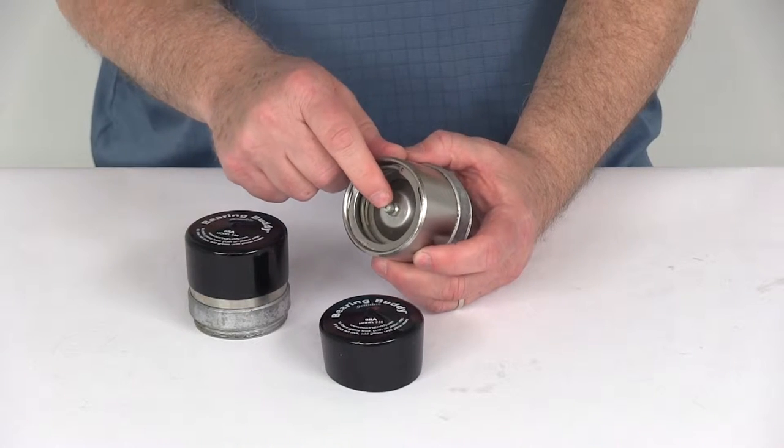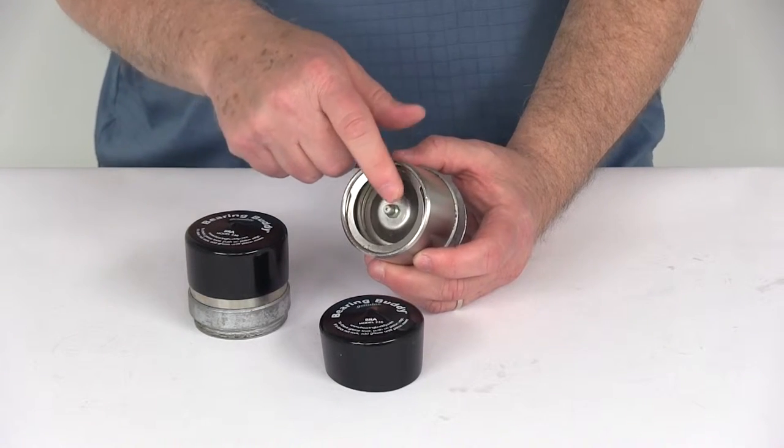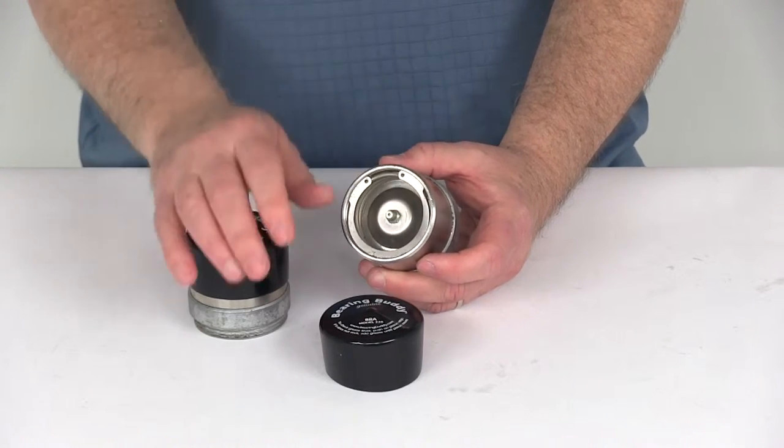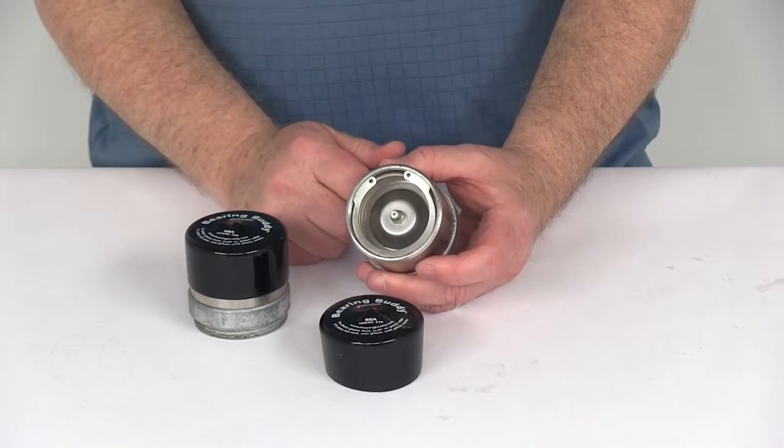If you notice the grease zerk fitting right here, that'll give you easy access to putting grease in here, making adding your grease to the bearings very quick and simple. Just put your grease gun on there and you can pump the grease in there.